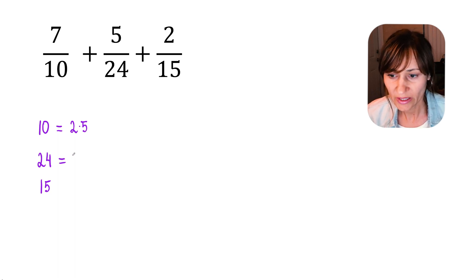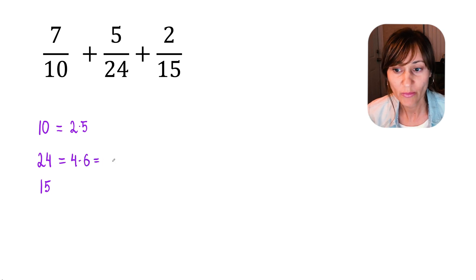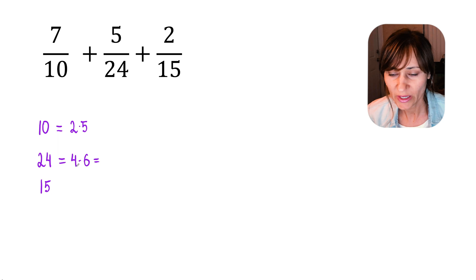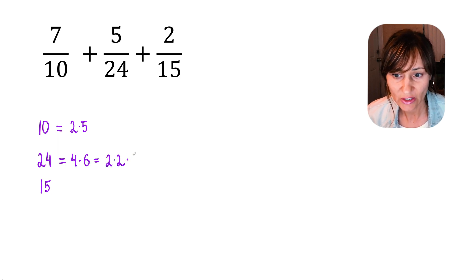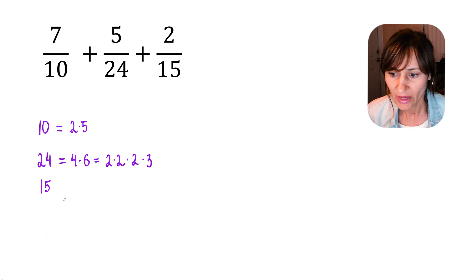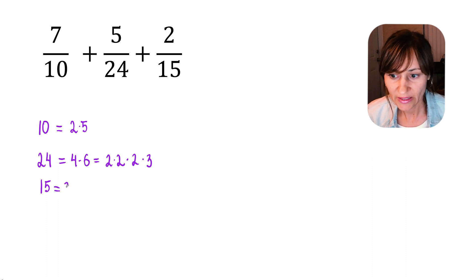24 we can write as 4 times 6. 4 and 6 are not prime numbers, so we can keep going. We can write 4 as 2 times 2, and we can write 6 as 2 times 3. And 15 we can write as 3 times 5.